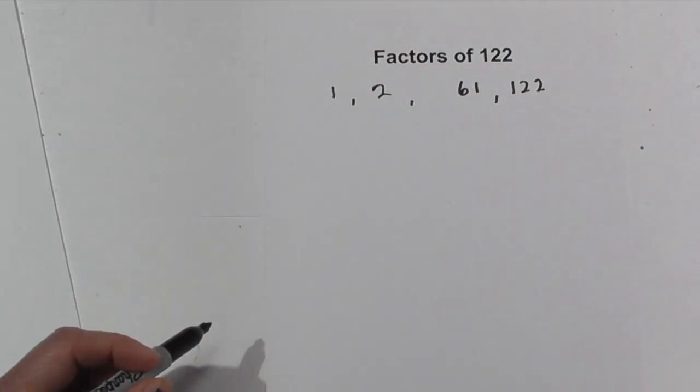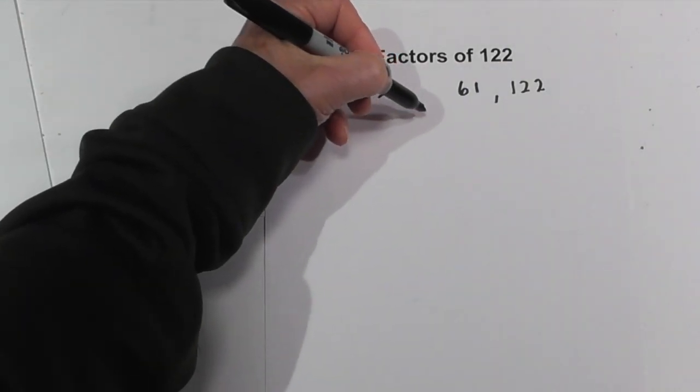So the factors of 122 are 1, 2, 61, and 122.